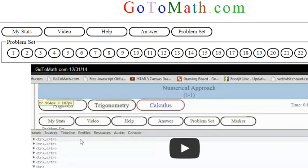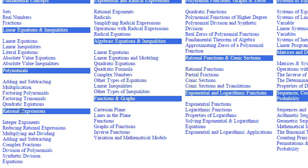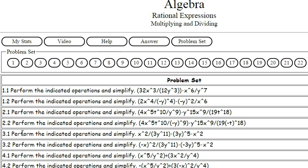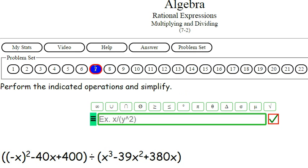Hey, we're at GoToMath.com. Click on the Algebra. Let's go down to something here. Multiplying and Dividing. That's what we're doing. And we're looking at 7.1.